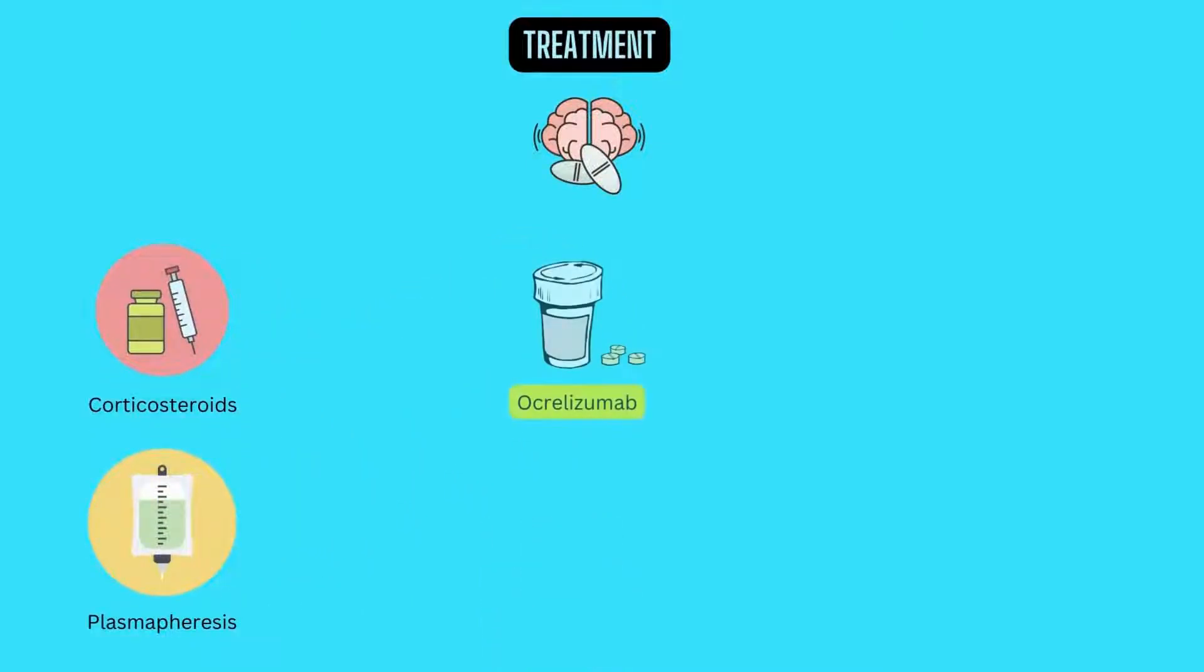The drugs used in MS include ocrelizumab. For primary progressive MS, ocrelizumab is the only FDA approved disease modifying therapy or DMT. Those who receive this treatment are slightly less likely to progress than those who are untreated. Ocrelizumab is given via an intravenous infusion by a medical professional. Infusion-related side effects may include irritation at the injection site, low blood pressure, a fever, and nausea among others. Some people may not be able to take ocrelizumab, including those with a hepatitis B infection. Ocrelizumab may also increase the risk of infections and some types of cancer, particularly breast cancer.